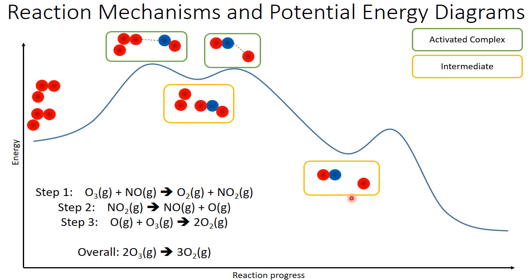Finally, that monatomic oxygen will form a final activated complex with the other molecule of ozone. And that gets us to our products, three oxygen molecules.